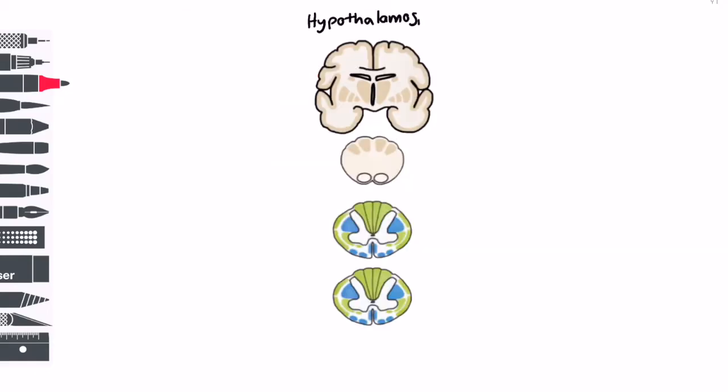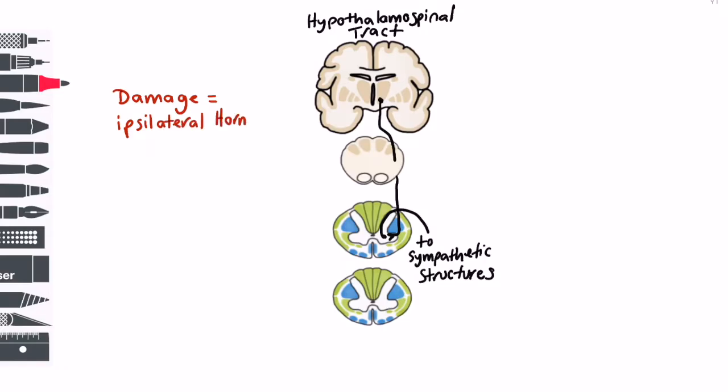Also, first order sympathetic neurons pass through the brainstem as they descend from the hypothalamus to the cervical spinal cord in the so-called hypothalamospinal tract. Damage to these neurons may result in an ipsilateral Horner's syndrome which presents as miosis and partial ptosis.